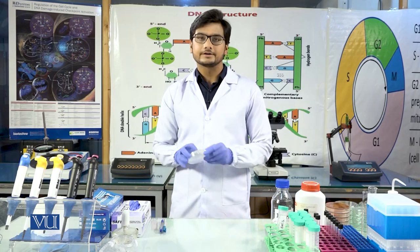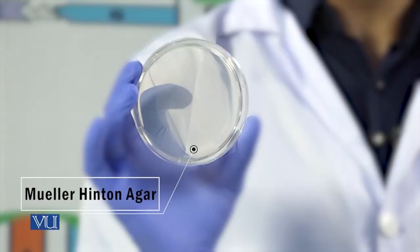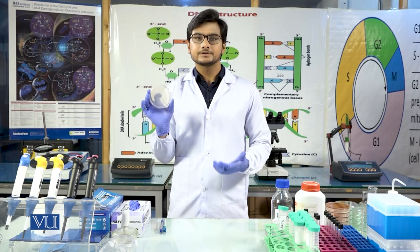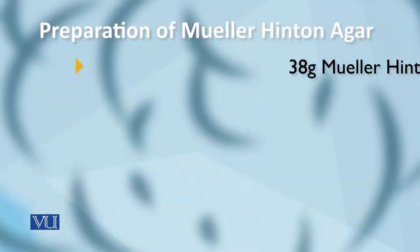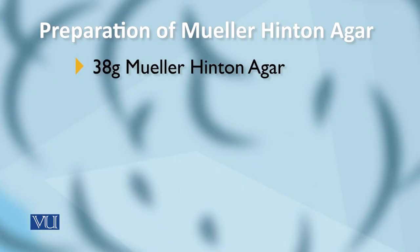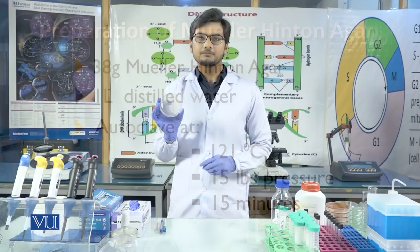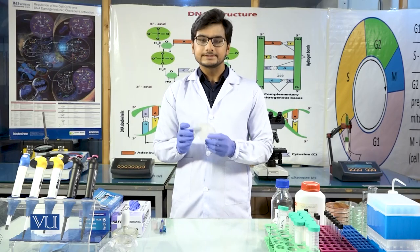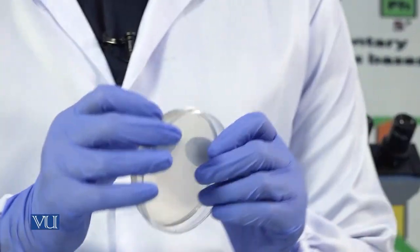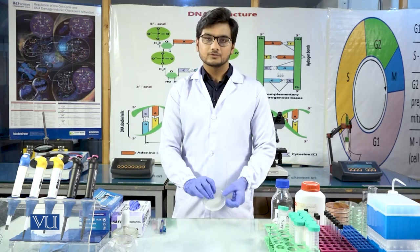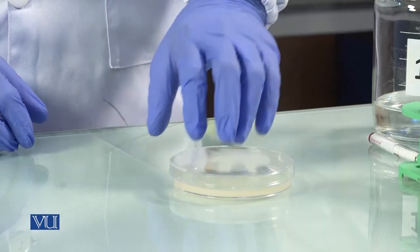In most laboratories, disc diffusion test is used. Different materials are required for this practical. Number one is Mueller Hinton agar. This is the solidified form of Mueller Hinton agar. To prepare it, we take 38 grams of Mueller Hinton agar in powder form and dissolve in one liter of distilled water. Then we autoclave it at 121 degrees centigrade, 15 pounds pressure for 15 minutes. After autoclaving, we pour the Mueller Hinton agar into the petri plates.